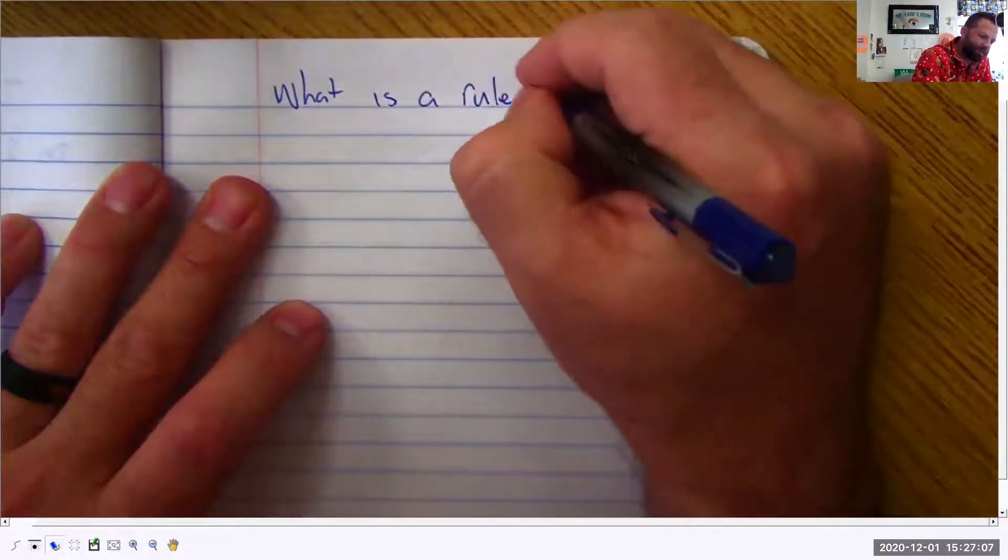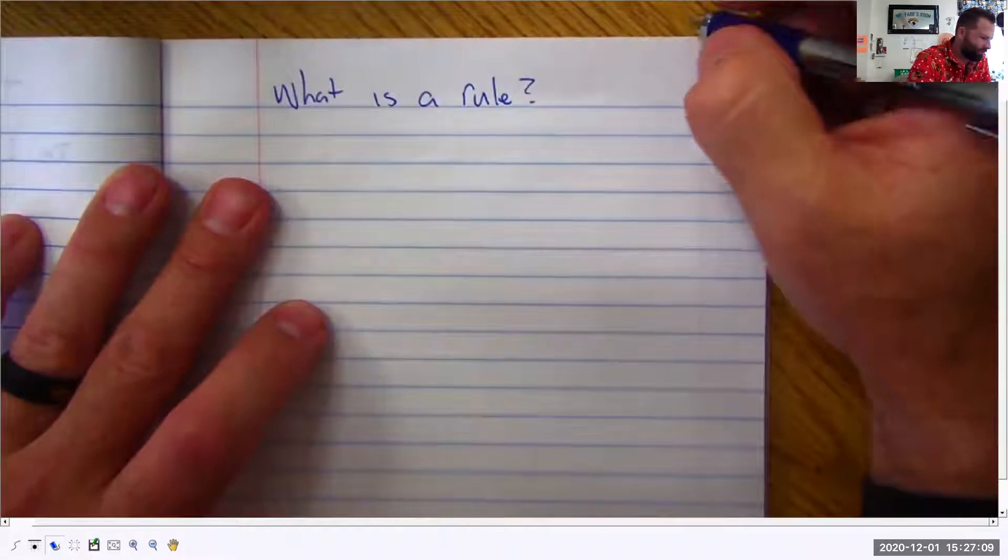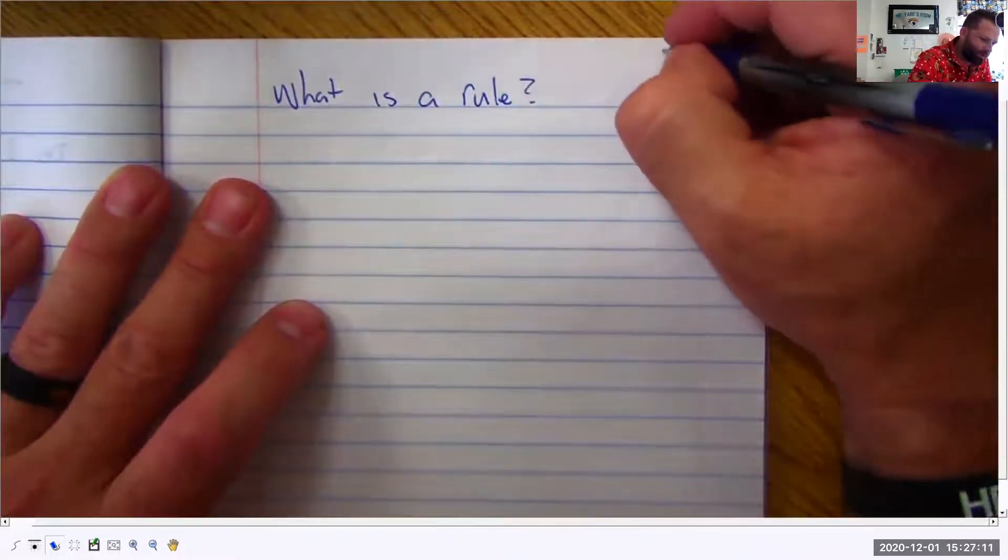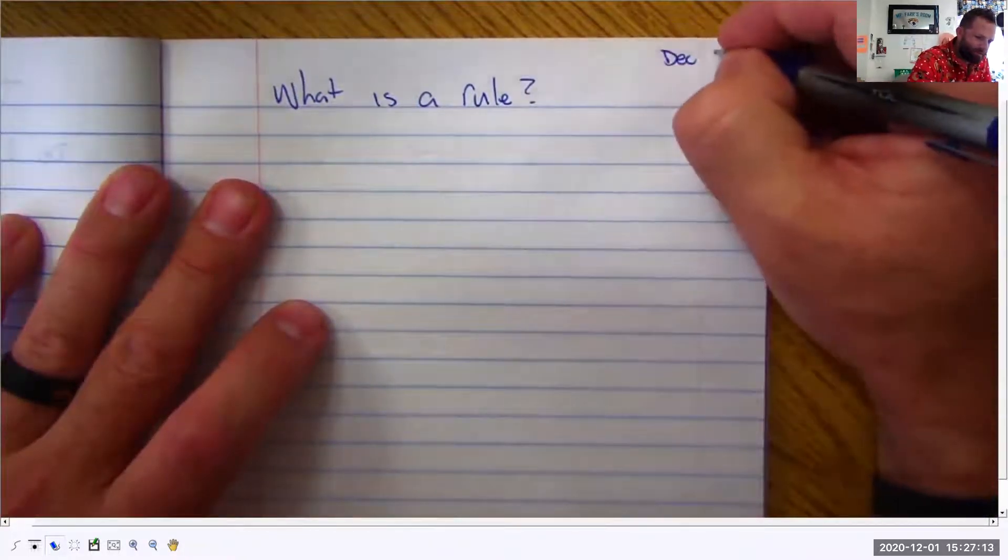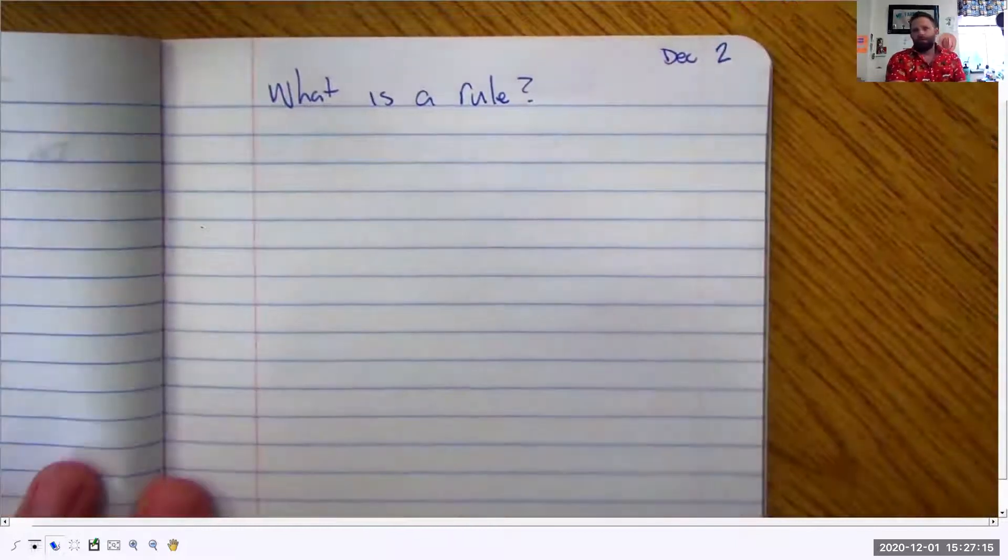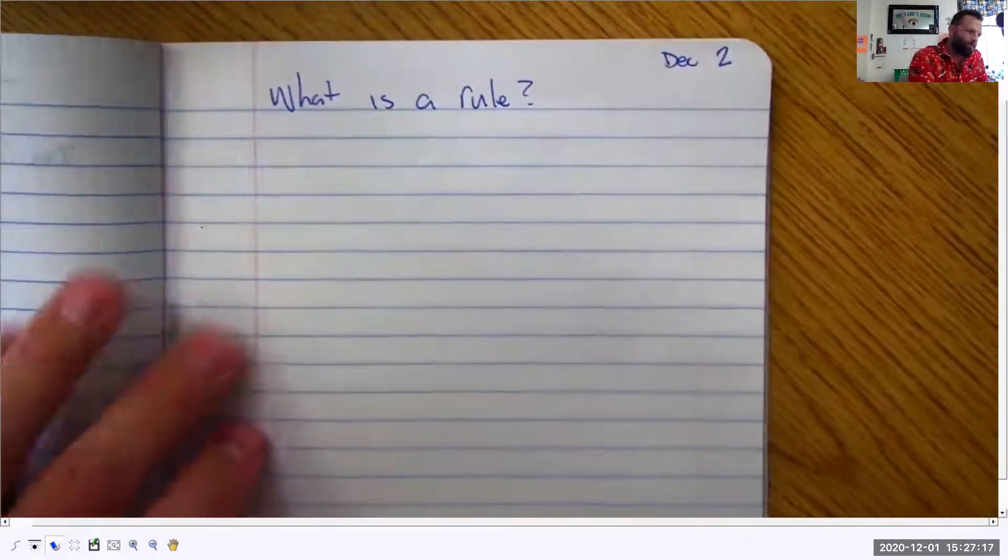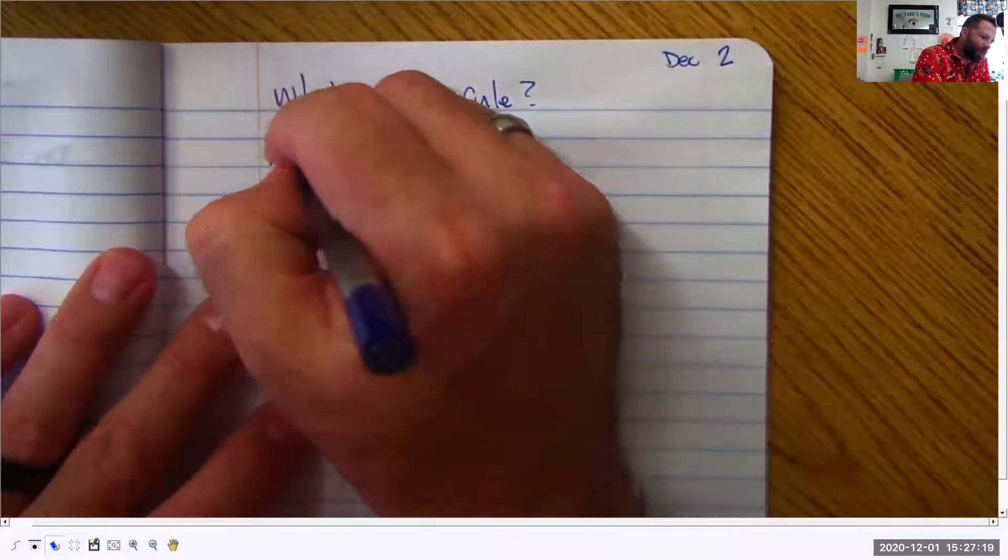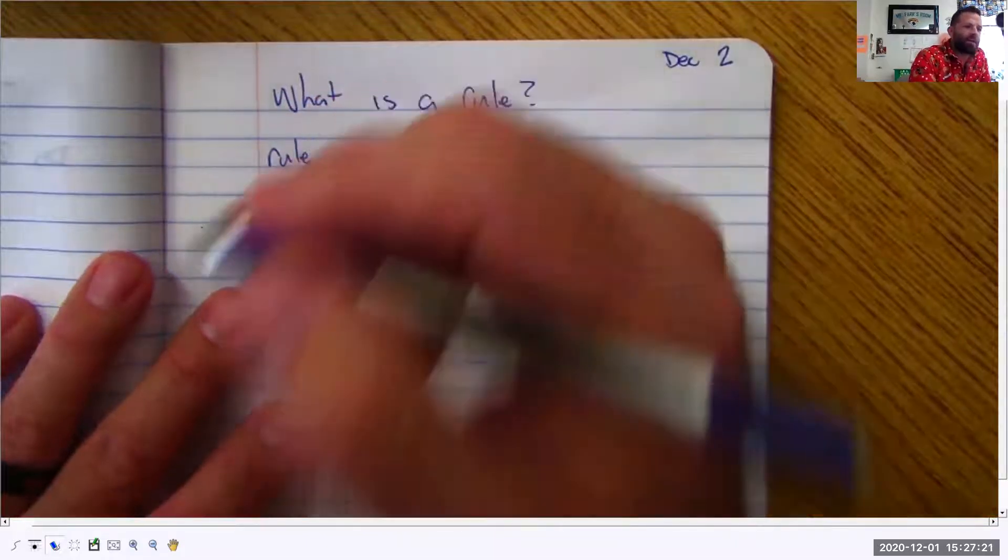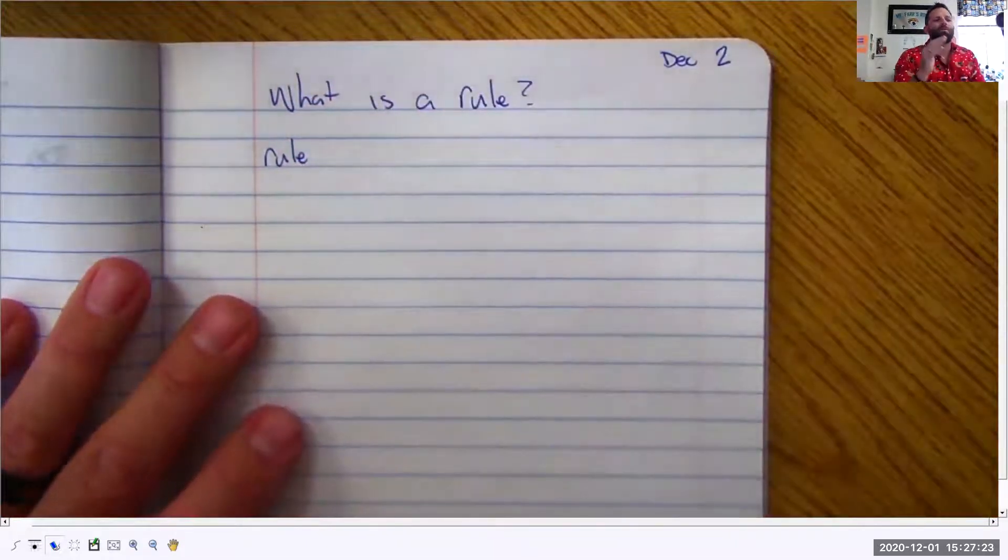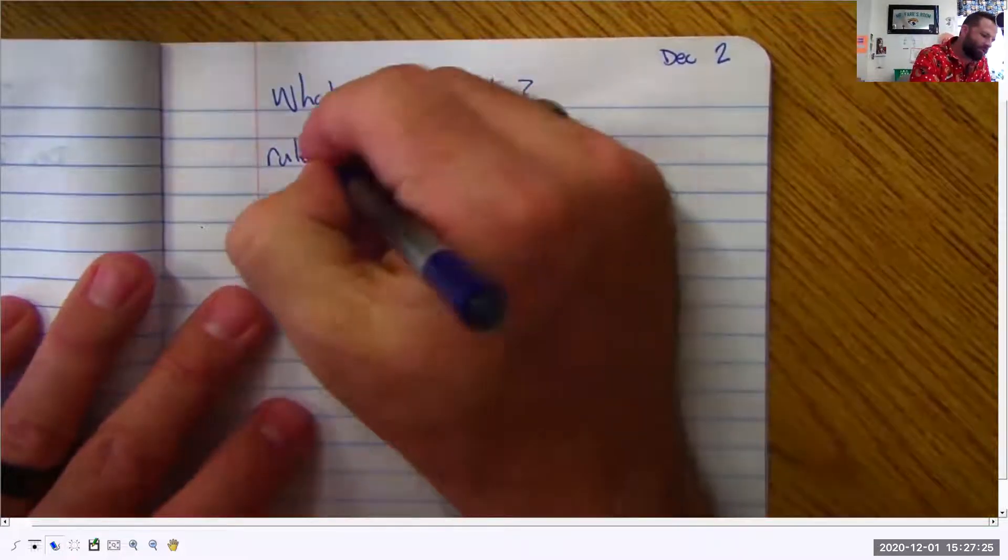Usually my handwriting by the end of the day gets a lot better but I got to be honest with you right now it looks pretty bad. December 2nd. Okay now let's talk about what a rule is. A rule for mathematics is a mathematical phrase that tells you how the numbers in a table are related. Okay so we're going to write that down.